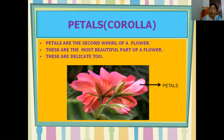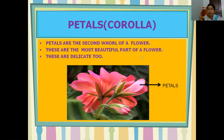These are the petals. All the petals together are called corolla. These bright pink color structures are called petals. Petals are the second whorl of the flower. These are the most beautiful and delicate parts of the flower. We, birds, and insects are all attracted to the flower by its beauty and the fragrance it emits. Petals are colorful, of various colors, and emit fragrance. Their function will be discussed later.